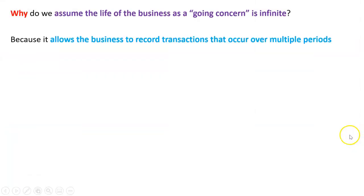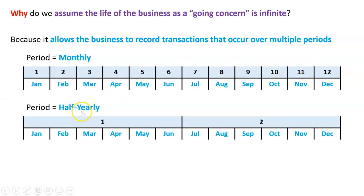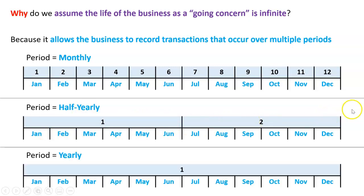So why do we assume that? Basically, it's because it allows you to record transactions over multiple periods. When we do the period assumption we'll explore this in more detail, but periods can be monthly — so 12 periods a year, one for each month. They can also be quarterly, every three months, or half-yearly, every six months — so two periods a year. Or maybe just one period a year, one giant period from January to December, or commonly in Australia in business, from July to June — 12 months long.